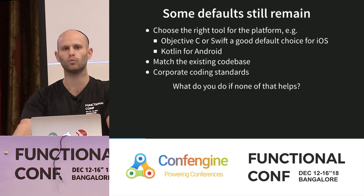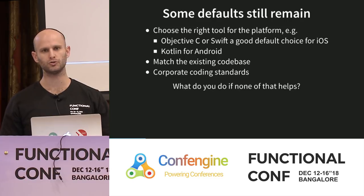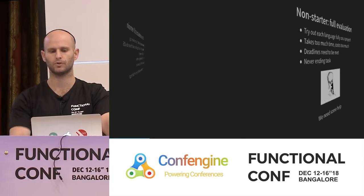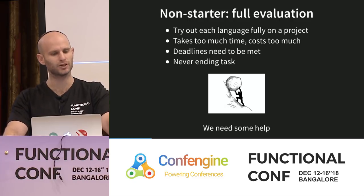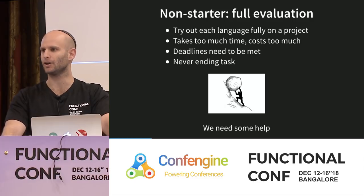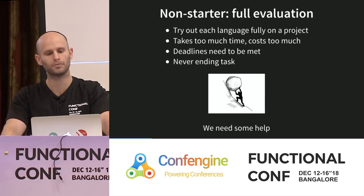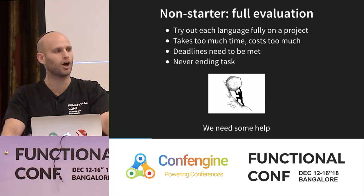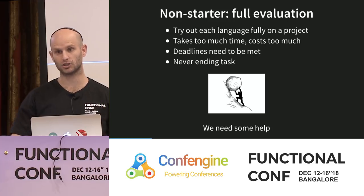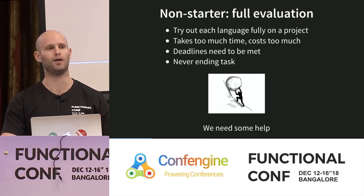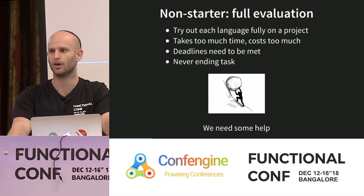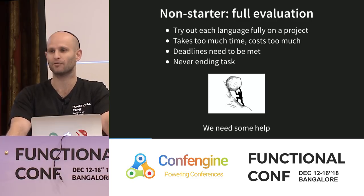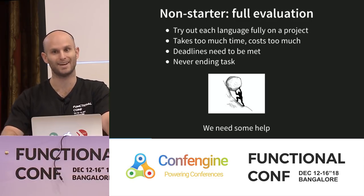What do you do if none of that applies — if you're in a domain where you could legitimately use 20, 30, or 100 different languages? One non-starter approach is to fully evaluate every single one of them: take all 100 languages and implement the full project in each one. This obviously is not going to work. It takes too much time, costs too much — and I don't just mean the business cost, I mean your mental health. And at the rate that languages come out, this is actually a never-ending task.